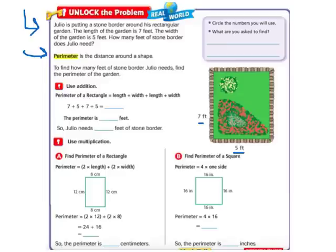I always remember perimeter like from watching movies where they say secure the perimeter. That means they want somebody to go out and make sure that all the edges around their property are being watched. So the edges around a shape is the perimeter. And then it tells us to find how many feet of stone border Julio needs, find the perimeter of the garden.